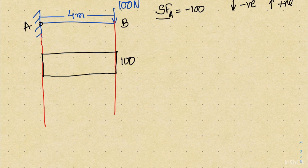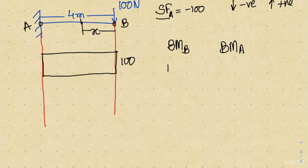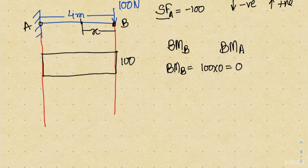Now let's find the bending moment. I am interested in the bending moment at point B, the bending moment at point A, and the bending moment at any location x between them. The bending moment equation tells us how bending moment changes from point B to point A. At point B the load of 100 Newton acts at zero distance, so the bending moment at B is 100 into 0 = 0. At a distance x from B, the bending moment is 100 into x.